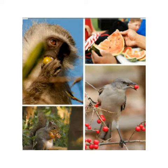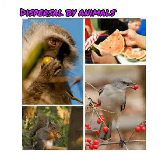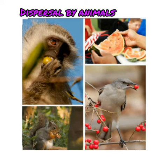It germinates on reaching the shore if it gets the right conditions. Dispersal by animals: some plants have juicy fruits that many animals and birds eat. The seeds come out in their droppings, which can be far away from the parent plant. Jamun, cherry, and apple seeds are dispersed in this way.